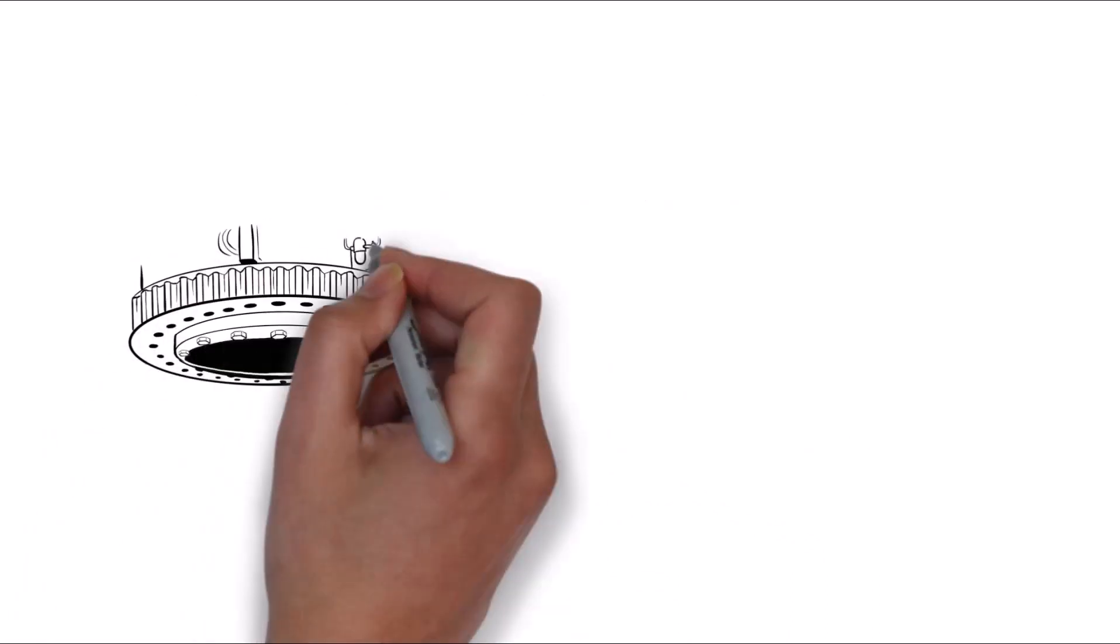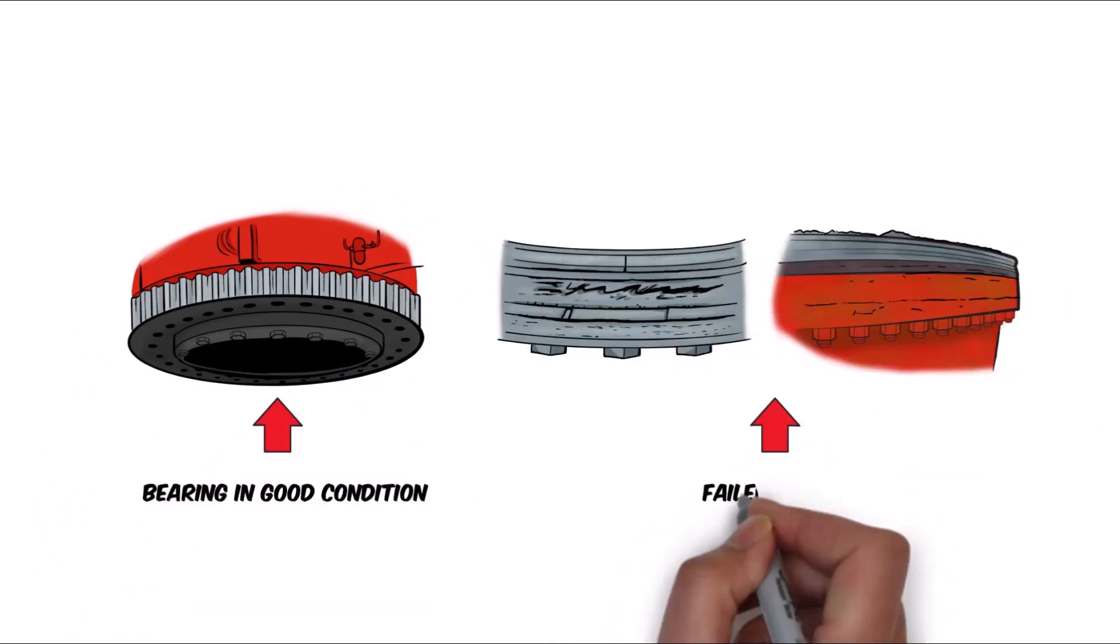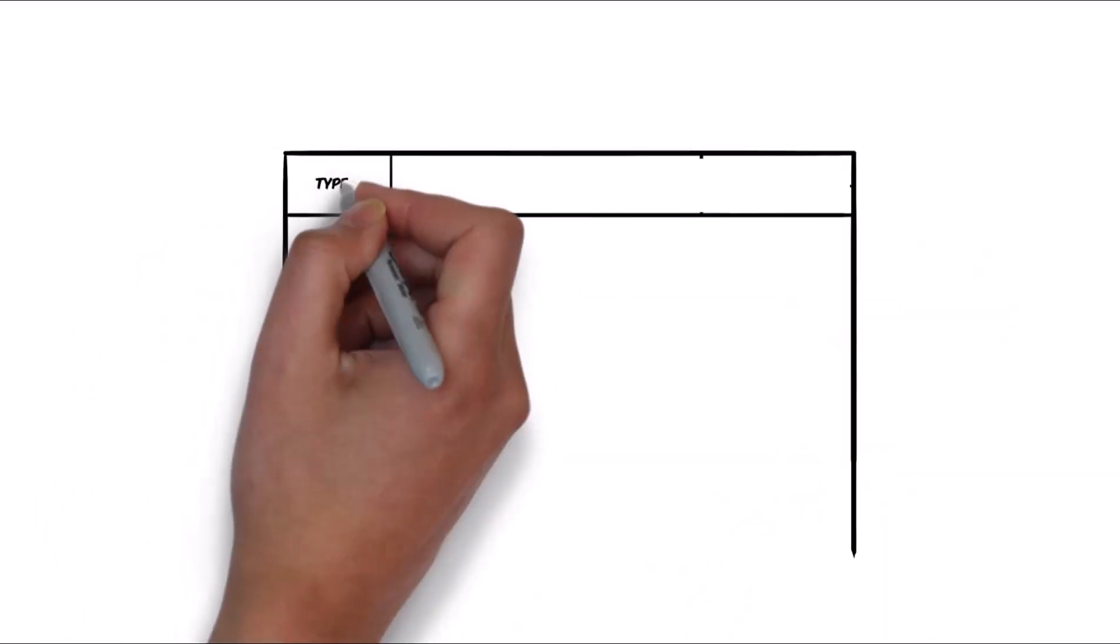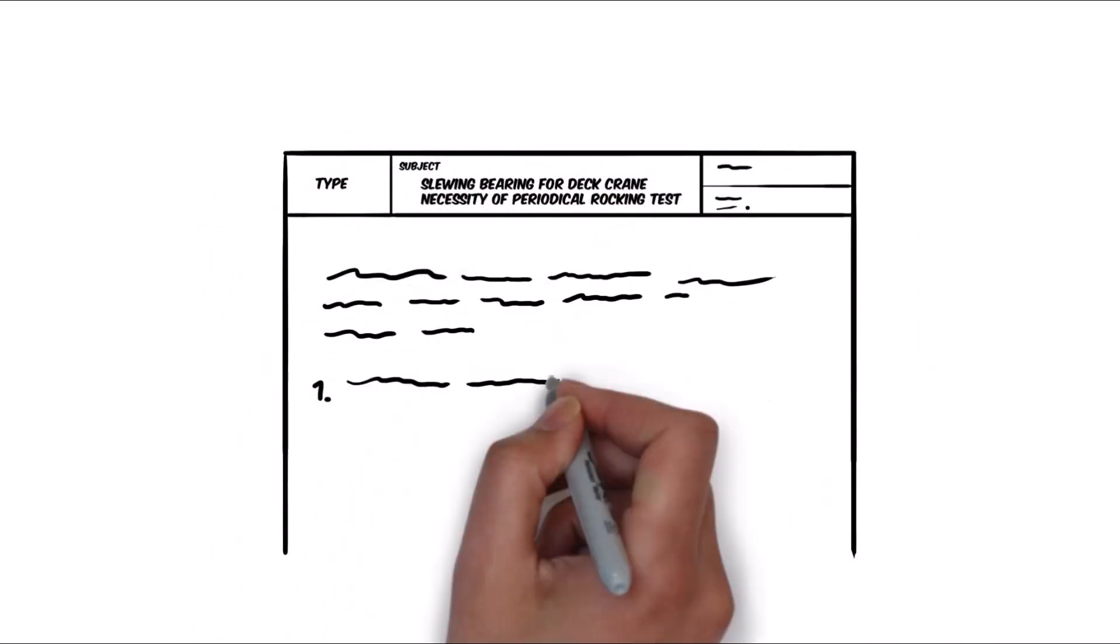To identify a failing slewing bearing, regular tilt clearance measurements, frequently known as the rocking test, are essential. Rocking tests are carried out every six months in accordance with manufacturer's instructions.